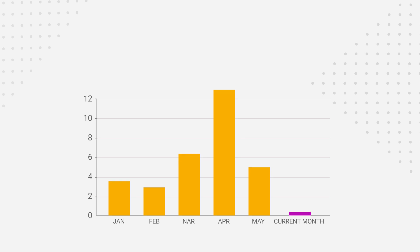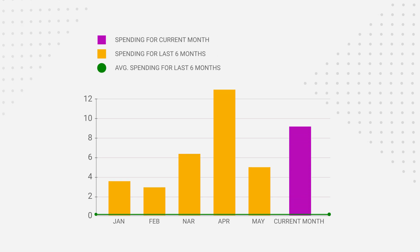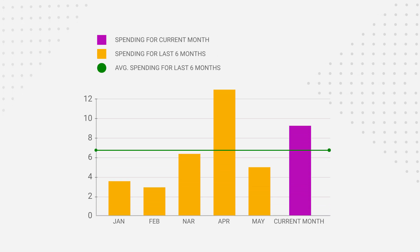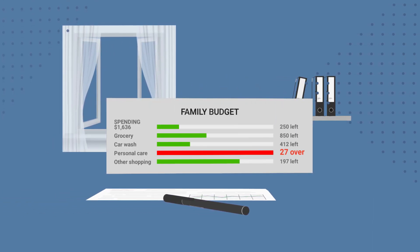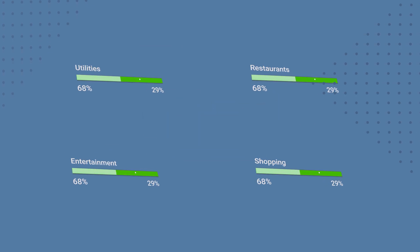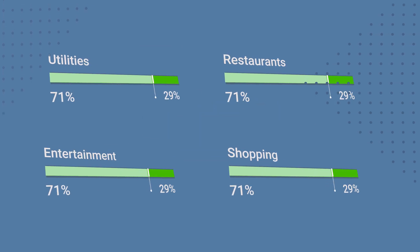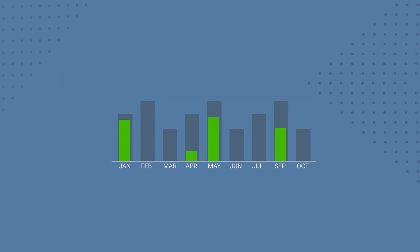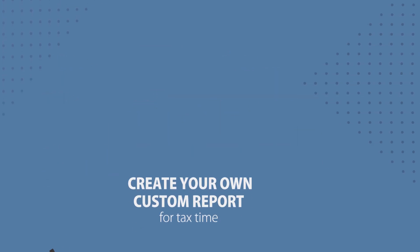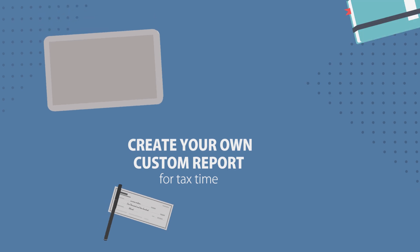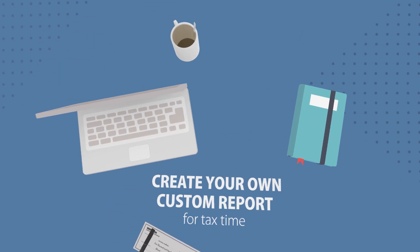Once you've got everything categorized, you can really start to take control. Set up a household budget to plan and monitor your spending. Analyze your spending by category or over time. Or create your own custom report for tax time with one click.